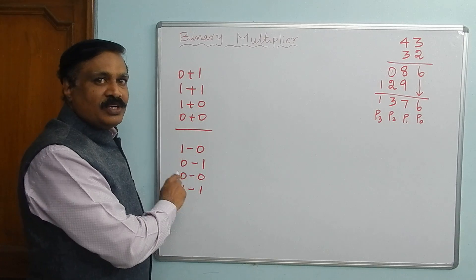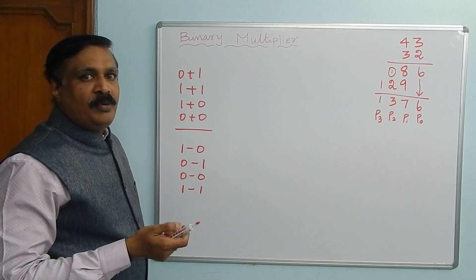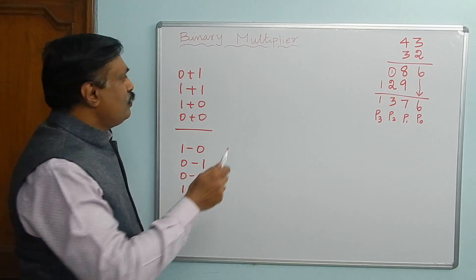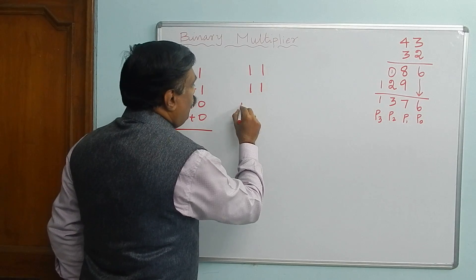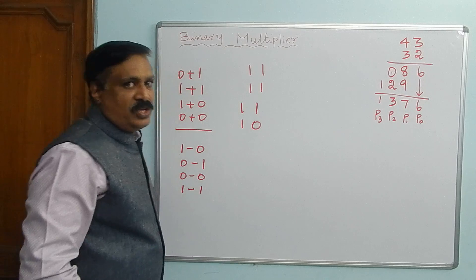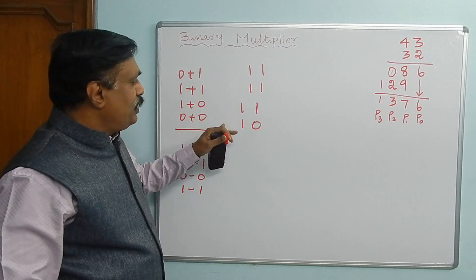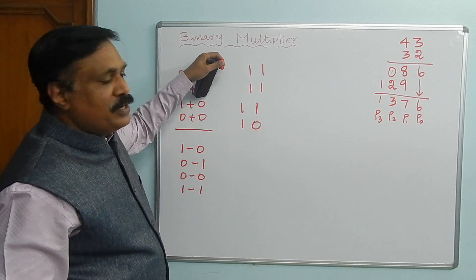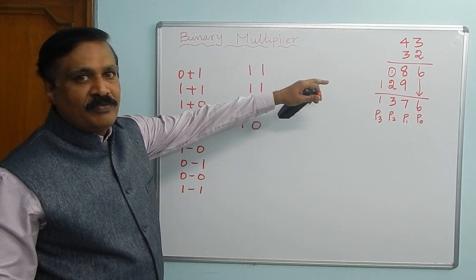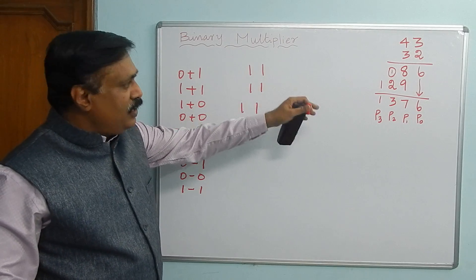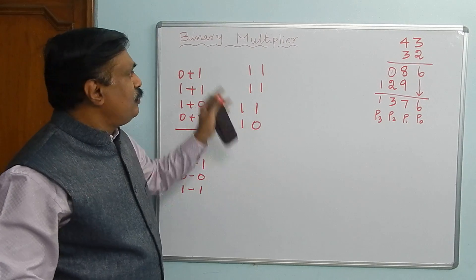In a half subtractor, you are subtracting two binary bits. Here in a binary multiplier, you are going to multiply two bits. I will explain first with a decimal number, just the multiplication, and then I will convert it to binary and then we will design a circuit for a binary multiplier.